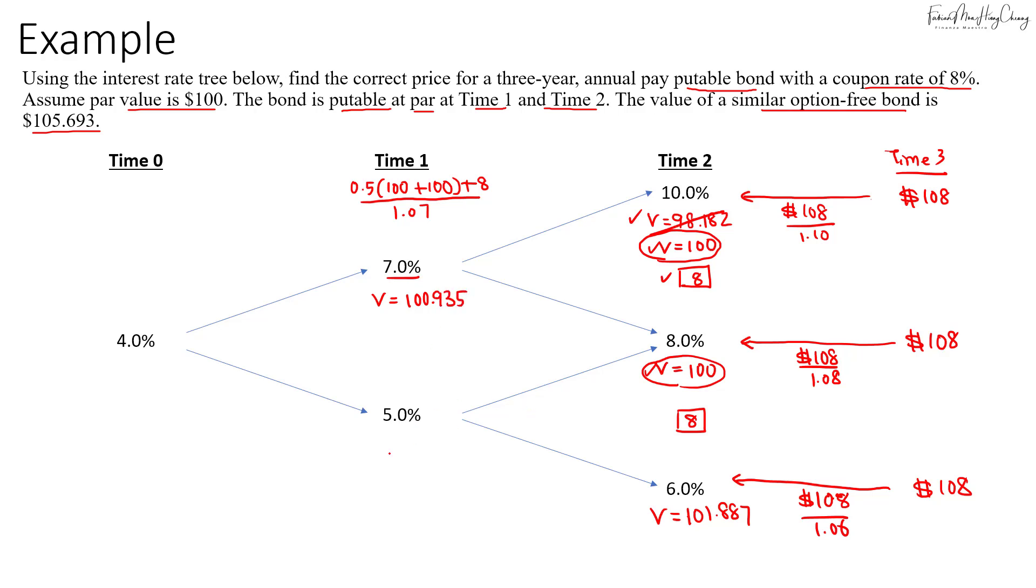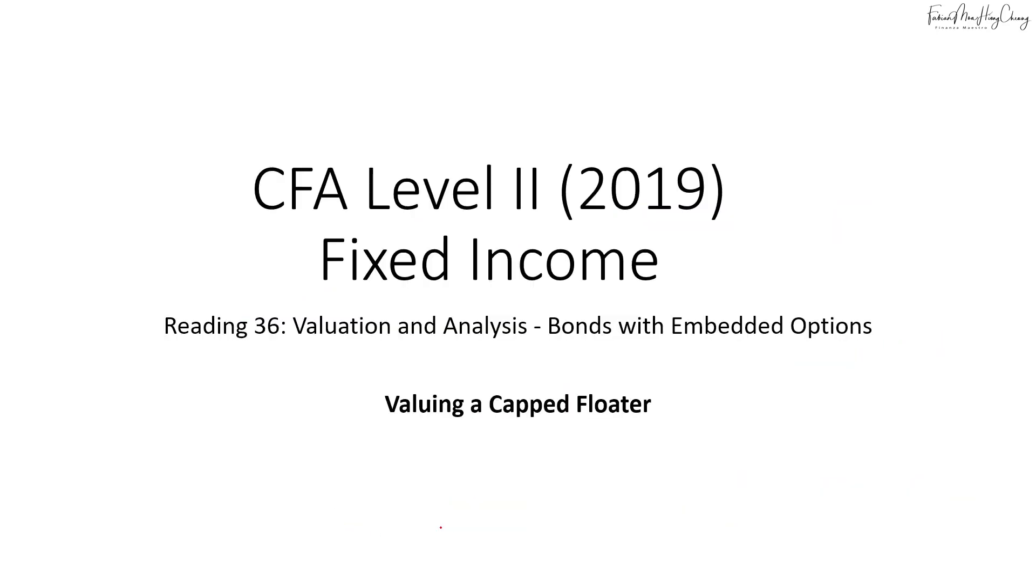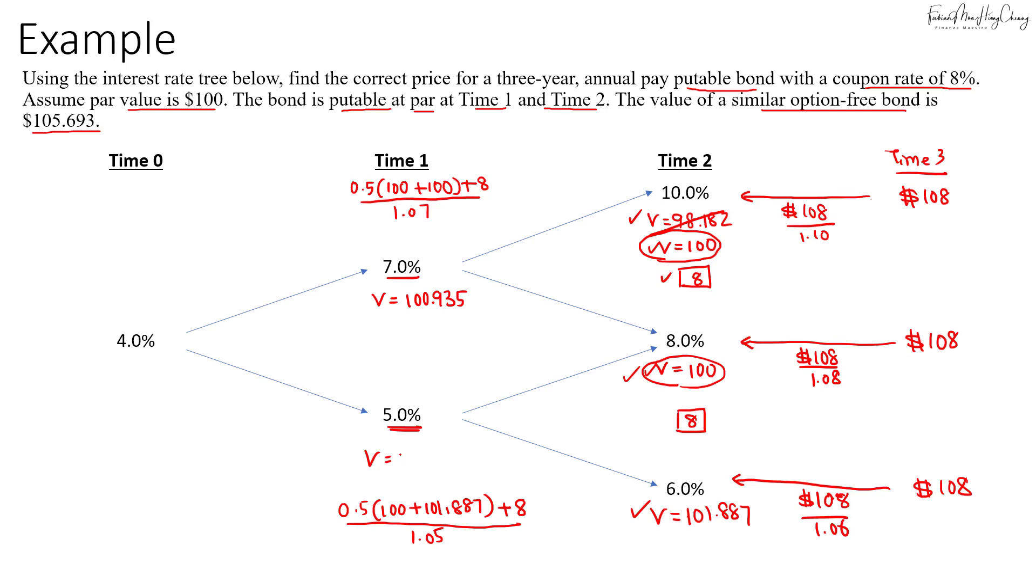For the next one, using 5%, the value here will be based on 0.5 multiply by 100 plus 101.887, then we add in the coupon $8, then discount them at 5%. That gives us 103.756.